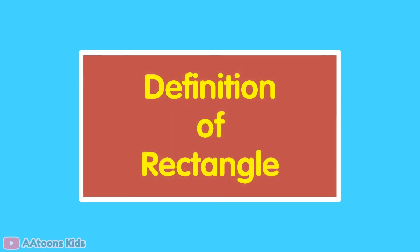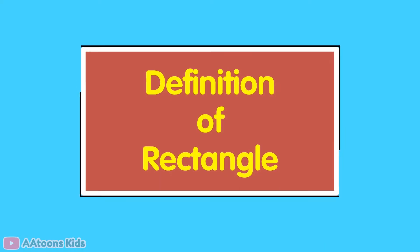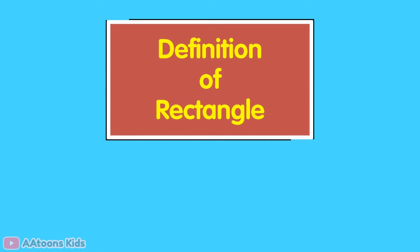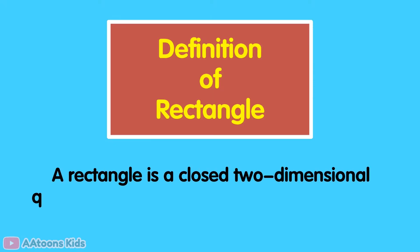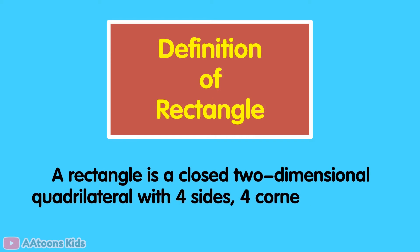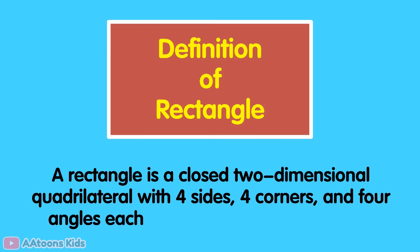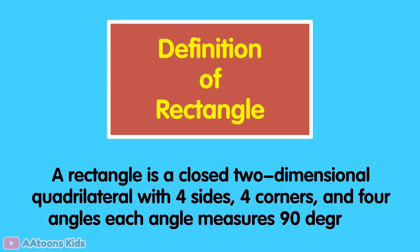Definition of Rectangle. A rectangle is a closed two-dimensional quadrilateral with four sides, four corners, and four angles. Each angle measures 90 degrees.